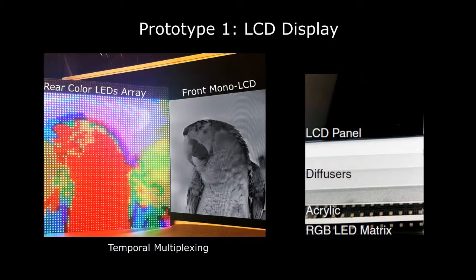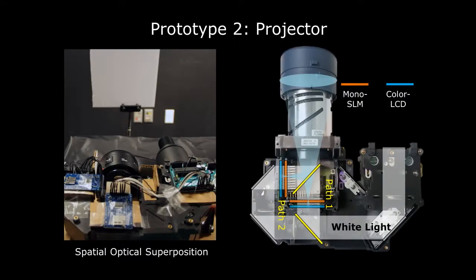We build two prototypes. The first prototype is built from a high-speed monochromatic LCD in the front and a low-resolution color LEDs array in the back. The frames are temporally multiplexed beyond the flicker fusion rate. The second prototype is a projector with only two spatial light modulators and two low-cost, low-resolution color LCDs. Their optical superposition also adds up to the reference image.